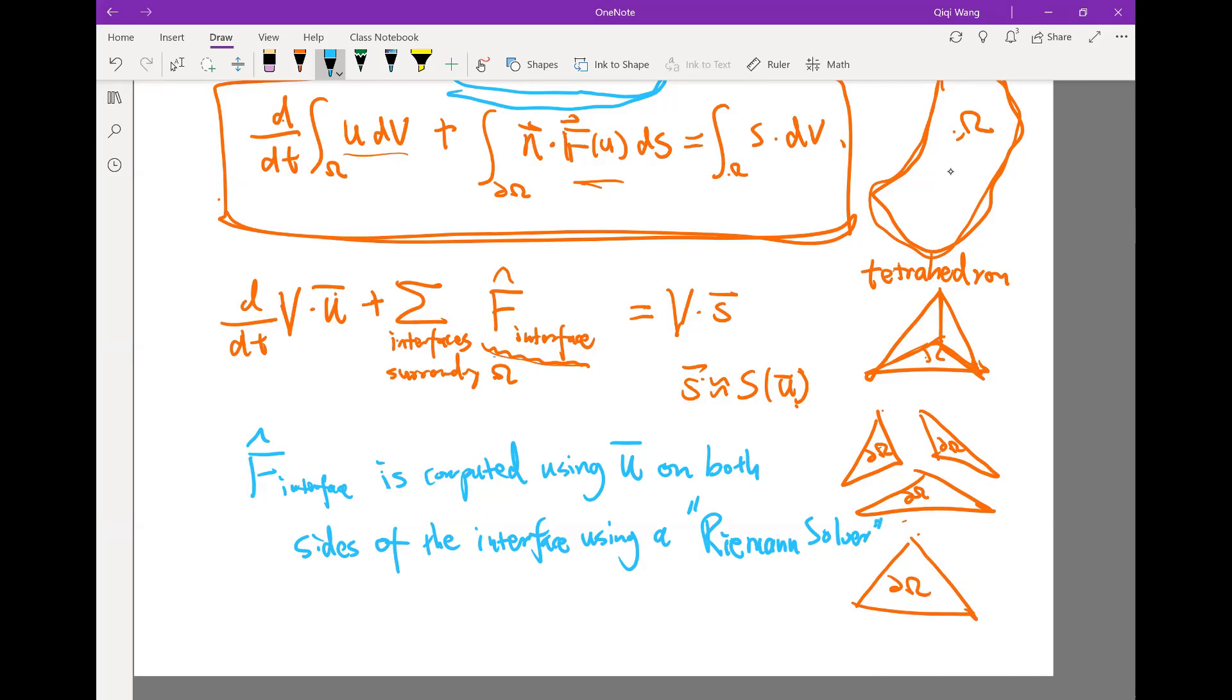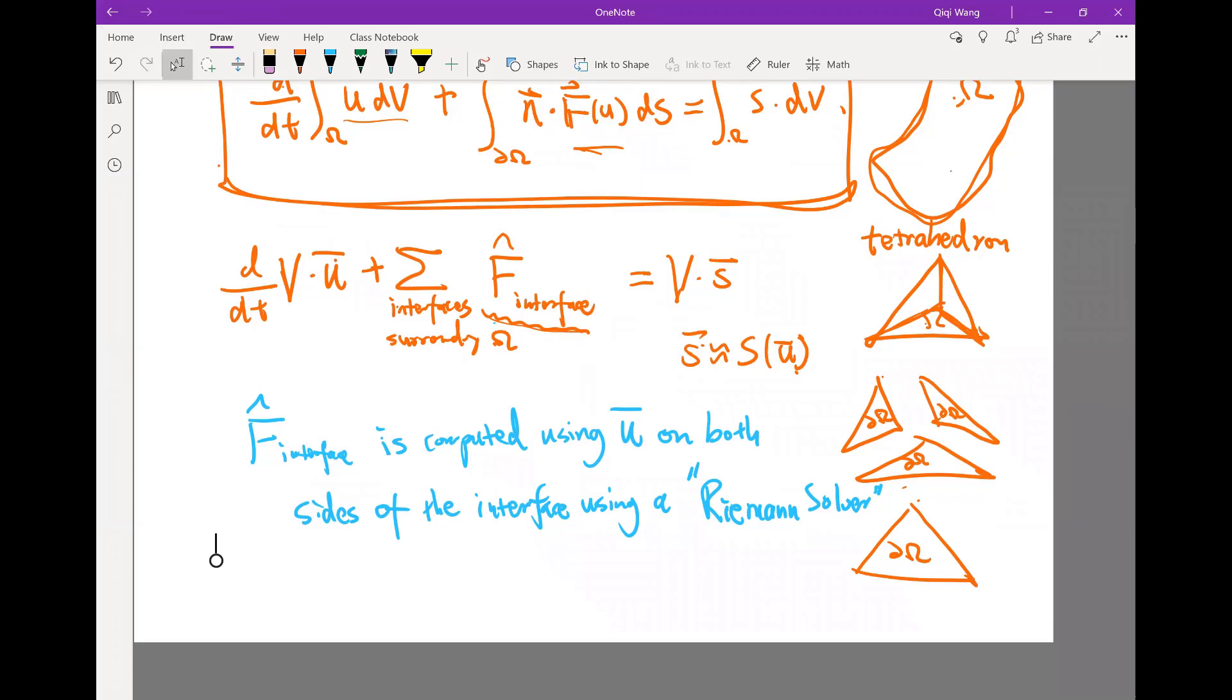It's called the Riemann solver because it really solves the so-called Riemann problem. The Riemann problem is basically saying that, okay, I have a discontinuity, I know what is the left state on my discontinuity, I know what is the right state in my discontinuity, and the Riemann problem is figuring out what is the flux that happens across that discontinuity. And this is exactly the problem we are solving here. We know what's the state on the left because we know what is the volume average on one side of the interface. We also know what is the volume average on the other side of the interface. We just need to figure out what is the flux across the interface.